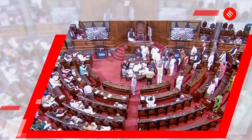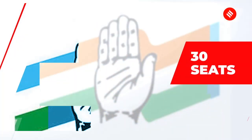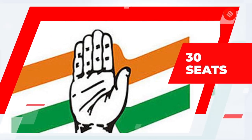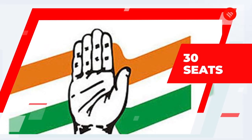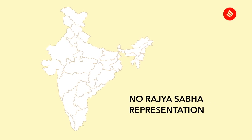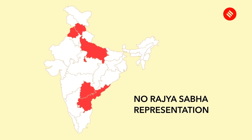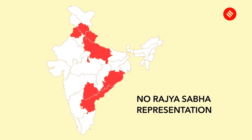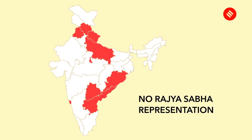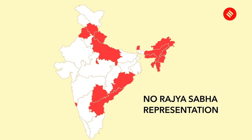The Congress will not have representation in Rajya Sabha from as many as 17 states and union territories after the forthcoming biennial elections. After the elections, its tally will go down to 30, its lowest ever in Rajya Sabha. The party will have no Rajya Sabha representation from Uttar Pradesh, Andhra Pradesh, Punjab, Telangana, Himachal Pradesh, Uttarakhand, Odisha, Delhi, and Goa. For the first time, it will have no representation from the 8 states in the North East either.